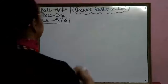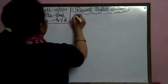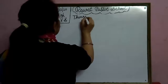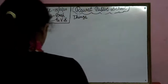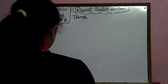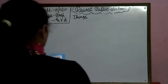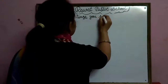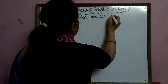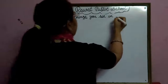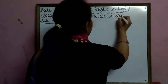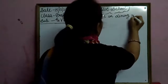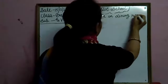Okay, things — T-H-I-N-G-S — things you see in dining room. D-I-N-I-N-G, dining room. R-O-O-M, room.